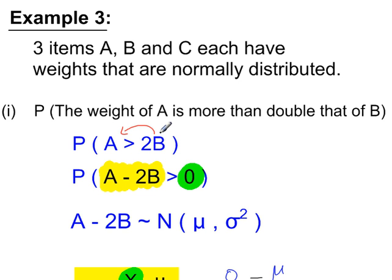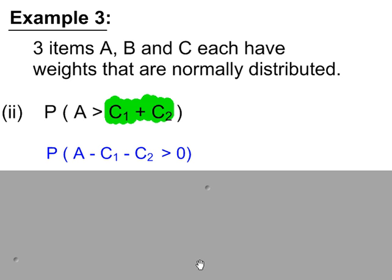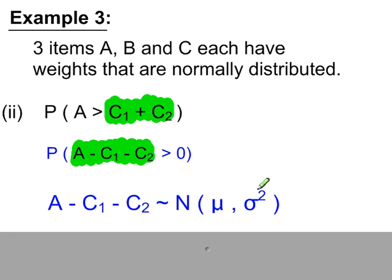In this example, a is a single item and b is also a single item, but we've doubled its weight — these are not two individual items from b, it's the same item with its weight doubled. For Part 2: c1 plus c2 represent two individual items from c, and this is their total weight. We're asking what's the probability that a single item from a weighs more than the total weight of these two individual items from c. So a minus c1 minus c2 is the normal variable we need, and we work out its mean and variance to calculate the probability.